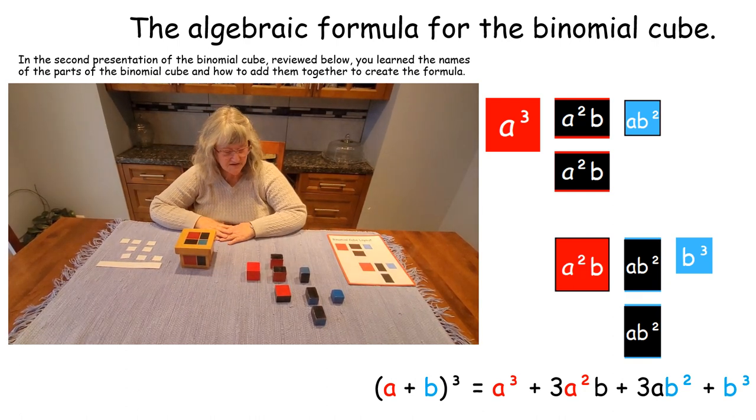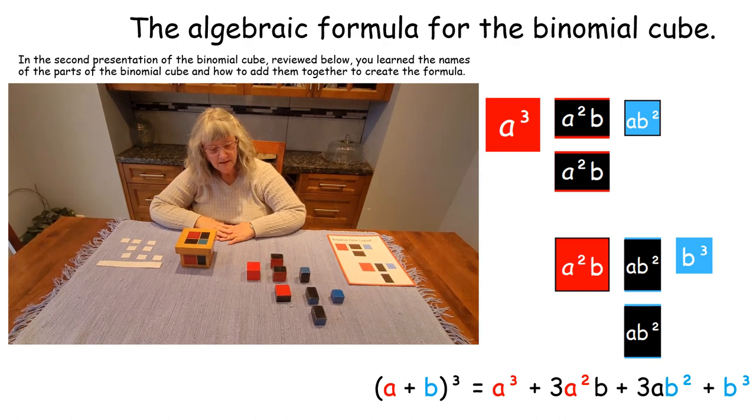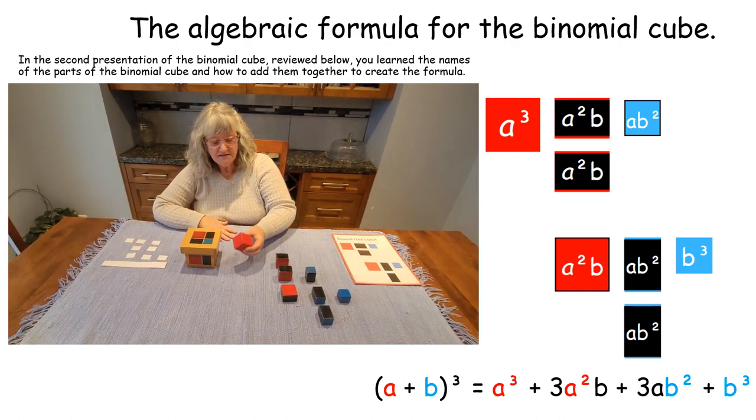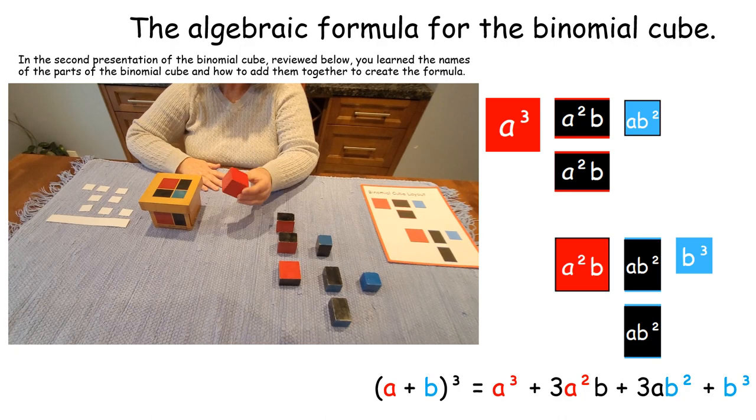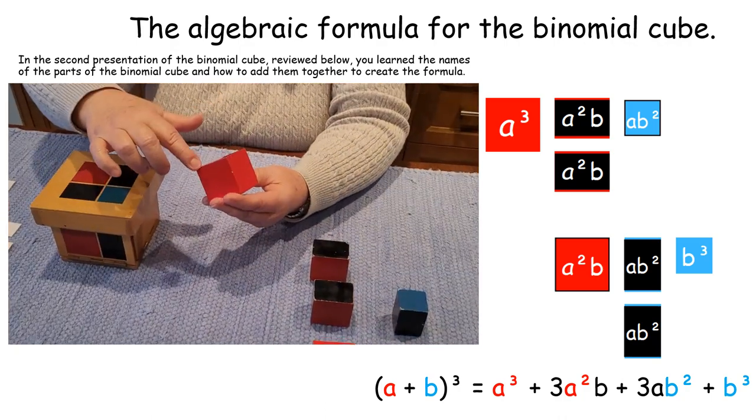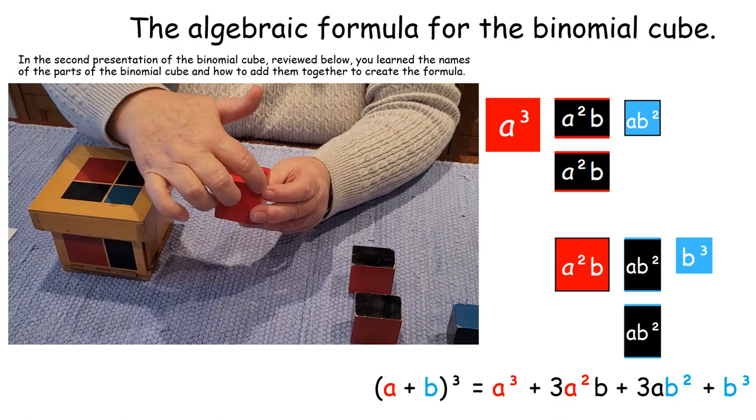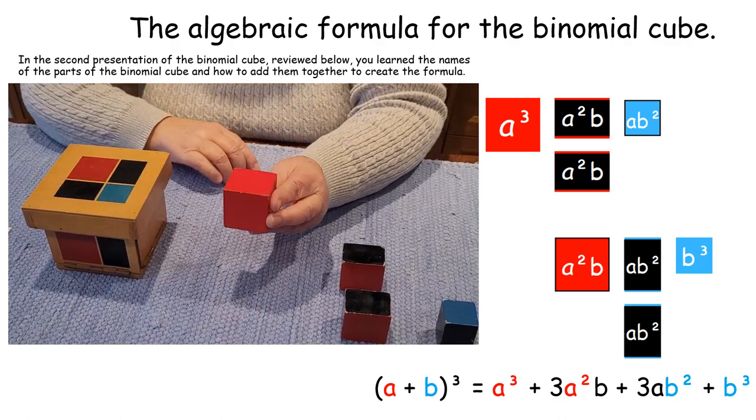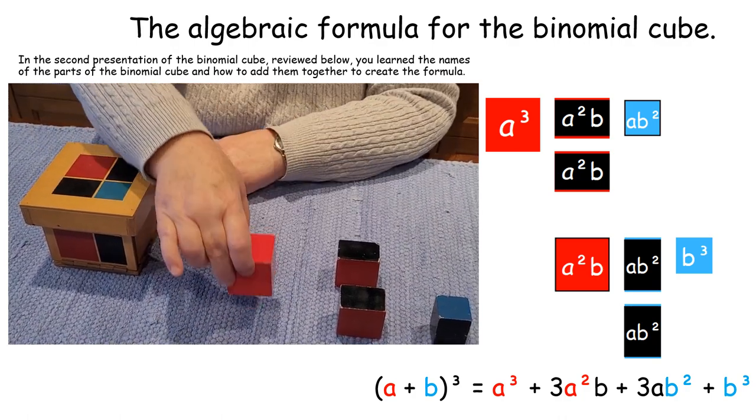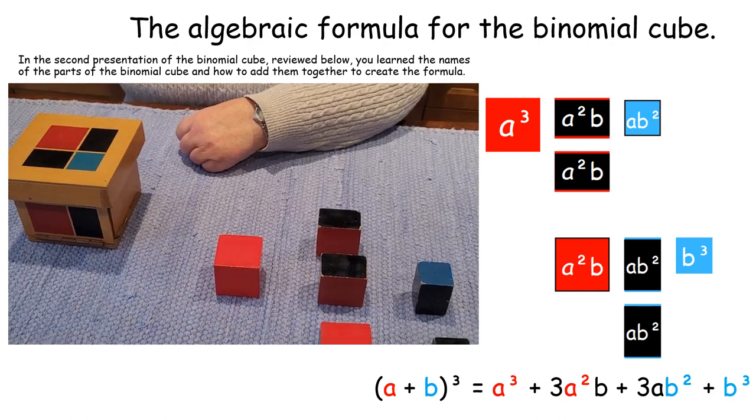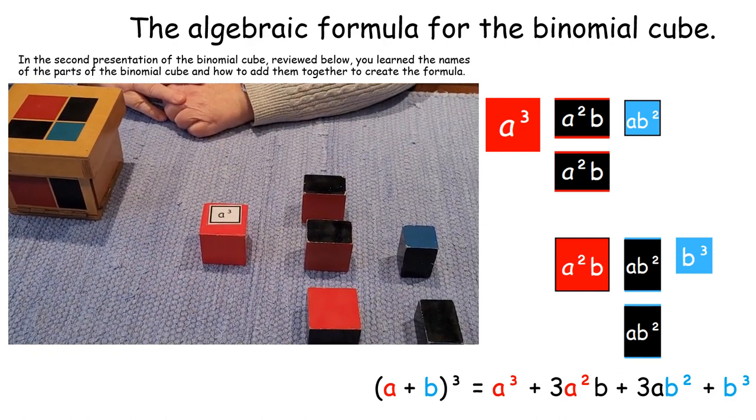I'm going to teach you the names of the binomial cube. We can see that this is a cube. All of the sides are of equal dimensions: the length, the width, and the height. The three dimensions are the same. We will call this one A cubed. And this is how we write A cubed.